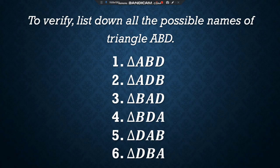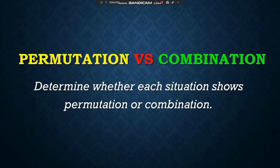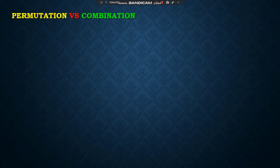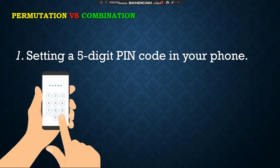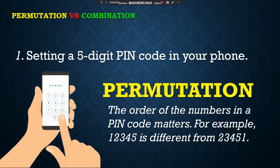Get ready for another set of problems. In this activity, we are asked to determine whether each situation shows permutation or combination. Ready? Number 1: Setting a 5-digit PIN code in your phone. Is this a permutation or a combination? This is a permutation. Why? Because the order of the numbers in a PIN code matters.